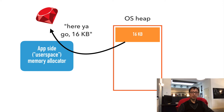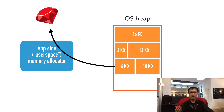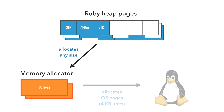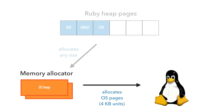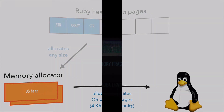The memory allocator carves out a piece of the requested size from an OS heap, marks it as occupied, and returns its address. As long as there is still space in an OS heap, the allocator will continue carving out free spaces. If there is not enough space in any OS heap, the allocator will allocate a new one from the kernel. To sum up: Ruby allocates any kind of memory — whether Ruby heap pages or large string data — from the memory allocator. The memory allocator allocates OS heaps from the kernel in units of OS pages, which are 4 kilobytes. That's it for memory allocation 101.